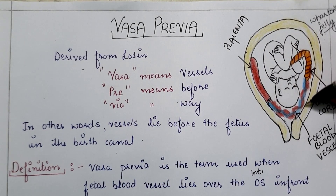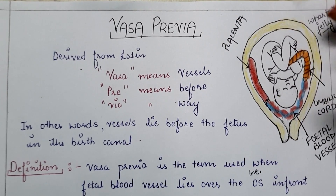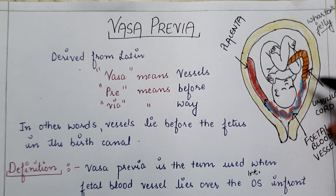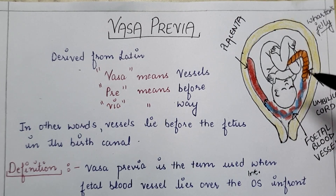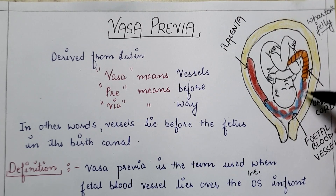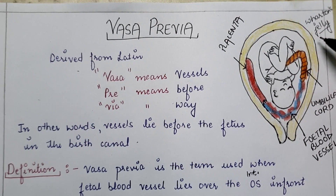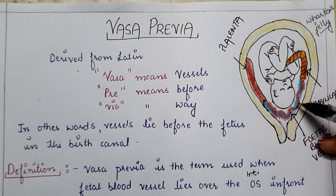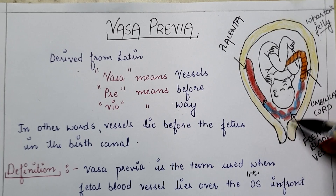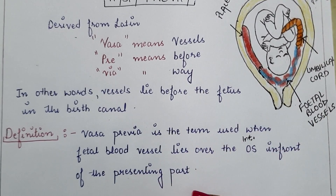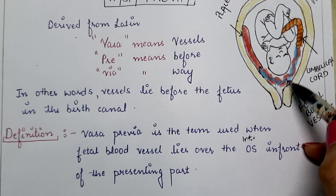As you can see in this diagram, these are the fetal blood vessels which lie before the fetus in the birth canal. This is the placenta, these are the fetal blood vessels, and this is the umbilical cord in orange. The umbilical cord contains the fetal blood vessels covered with Wharton's jelly — a gelatinous substance that protects them. But here Wharton's jelly is absent, so these blood vessels are unprotected, meaning there are higher chances of rupture.